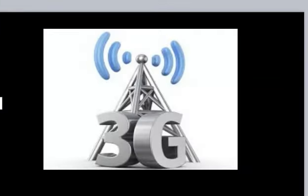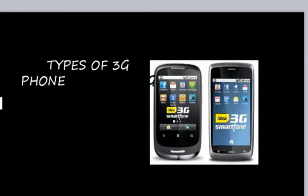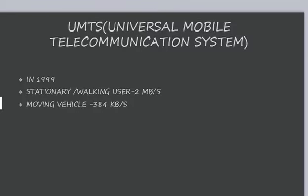Third generation (3G) phone, also called UMTS (Universal Mobile Telecommunication System), was launched in 1999. The stationary data rate is 2 MB per second, and the data rate for a moving vehicle is 384 KB per second.